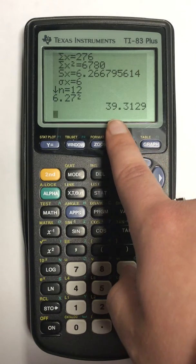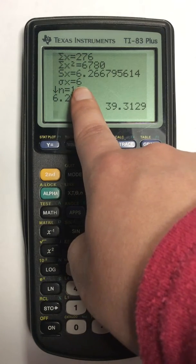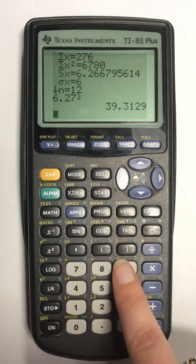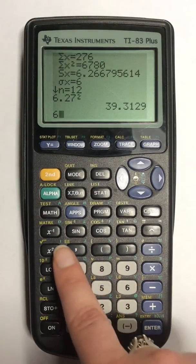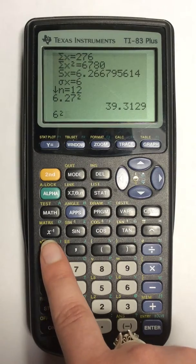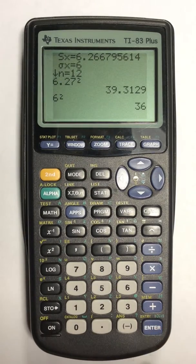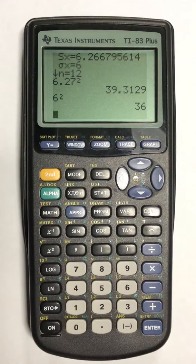If I wanted population variance, I would take my number for population standard deviation, which is 6. I would type in 6, hit the squared button, and hit enter. That will give me my population variance.